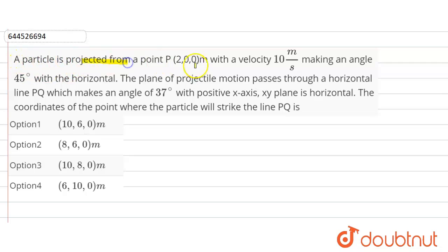A particle is projected from point (2, 0, 0) meters with velocity 10 meters per second, making an angle of 45 degrees with the horizontal.